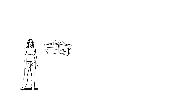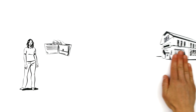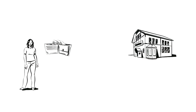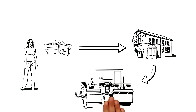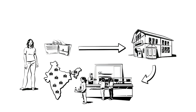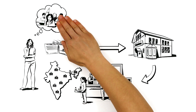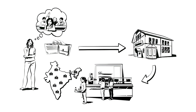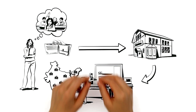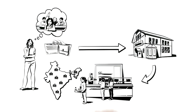Clare would like to use her money for something meaningful, and has chosen to support an organisation that provides free lunch in Indian schools. But is the effect of this contribution really that the children get healthier and consequently learn better? How can this be tested by a rigorous impact evaluation?